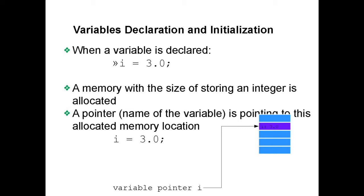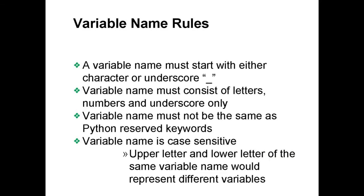Your variable I will become a pointer pointing at this memory location storing the value 3.0. When you execute another line of code — for example, I = 25 — you are changing the value of variable I from 3.0 to 25. This process occurs at the memory location allocated to variable I, so the value changes from 3.0 to 25.